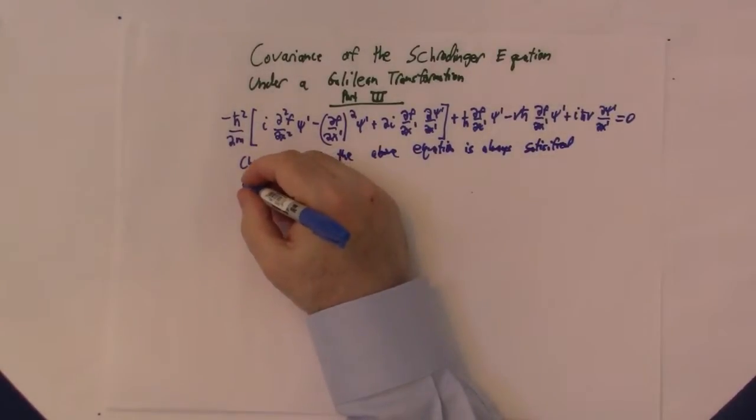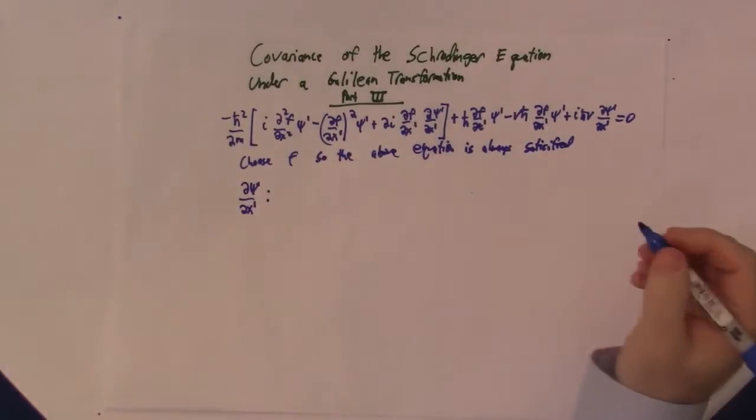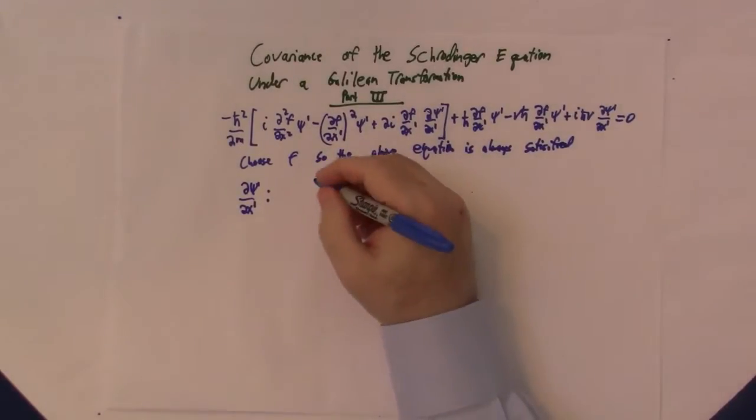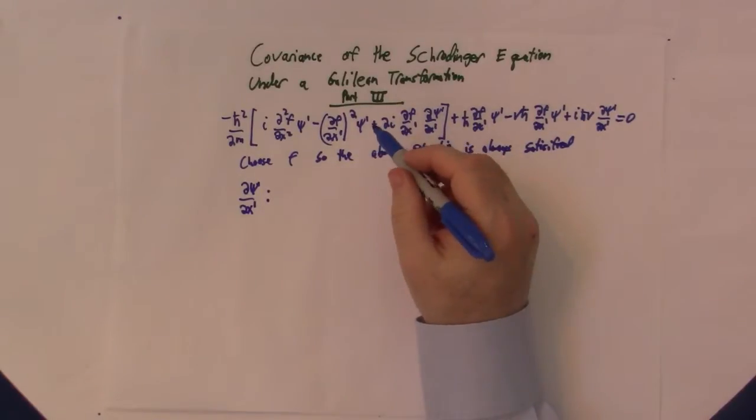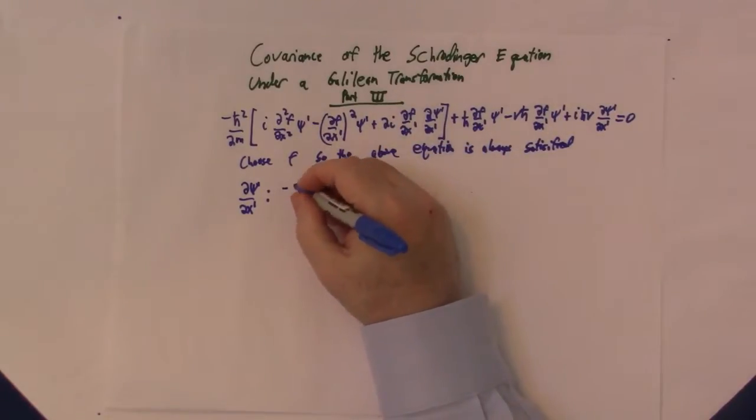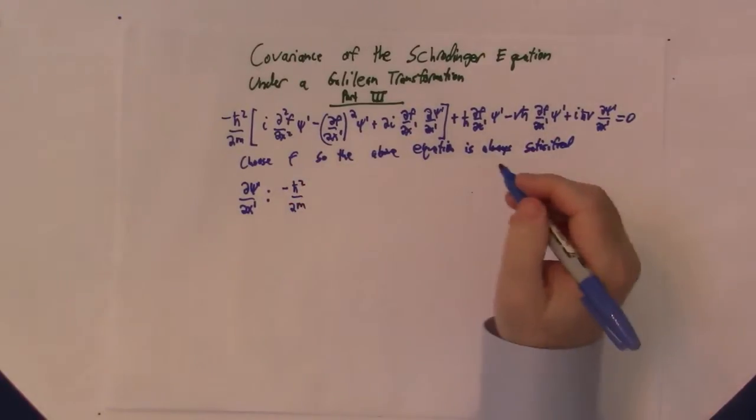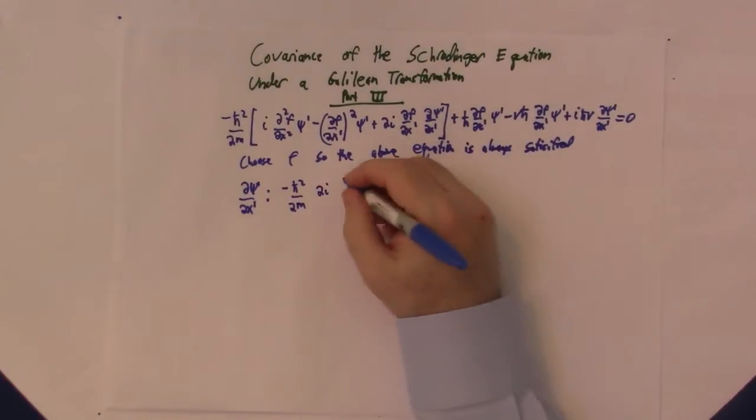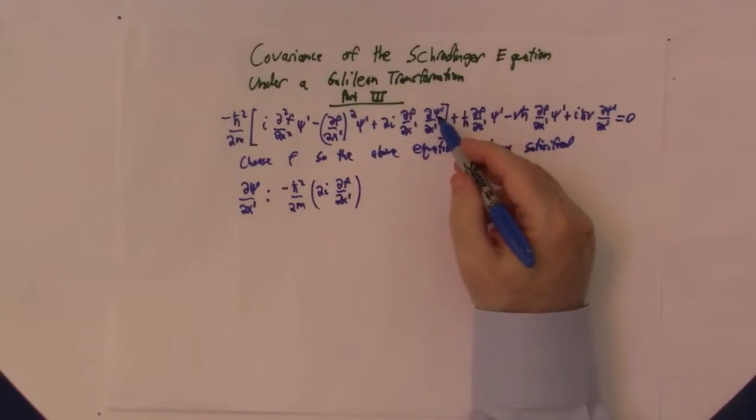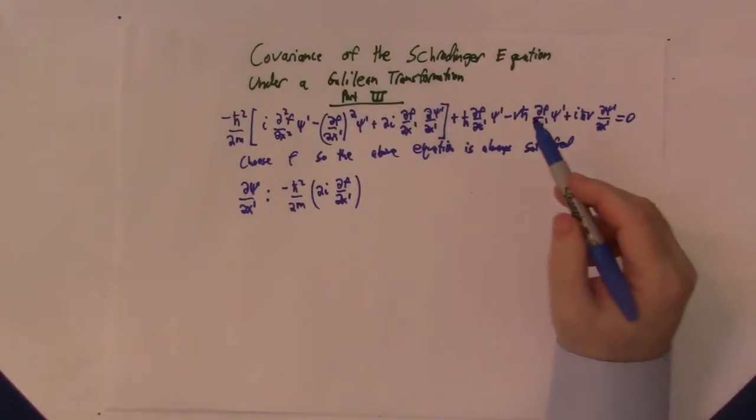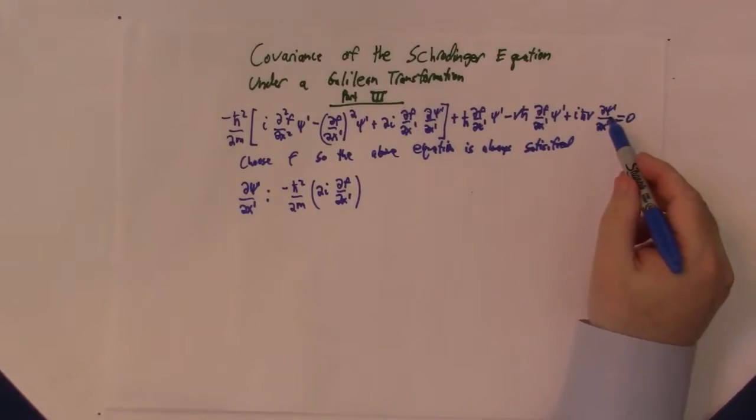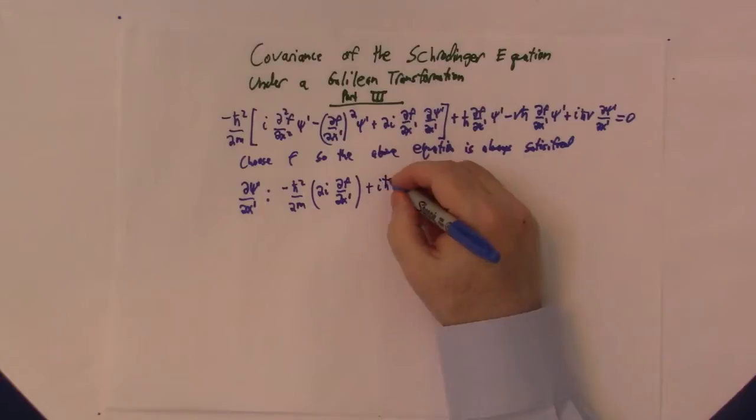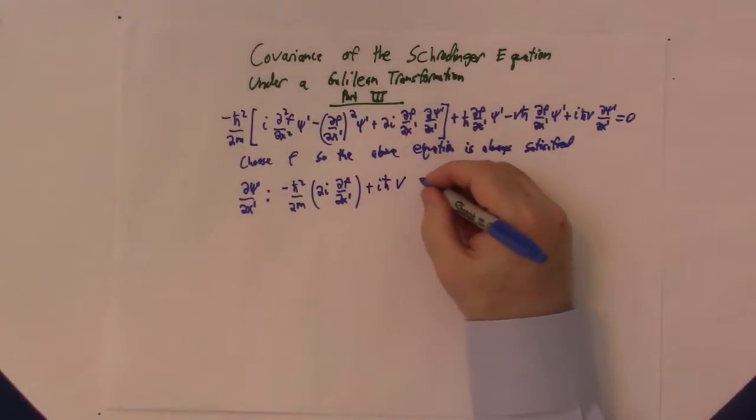So let's look at the coefficients. If we look at the partial of psi prime with respect to x prime, we get minus h bar squared over 2m times 2i partial of f with respect to x prime. So this is our equation. These are both psi primes. This is our final term: plus i h bar times v equals zero.